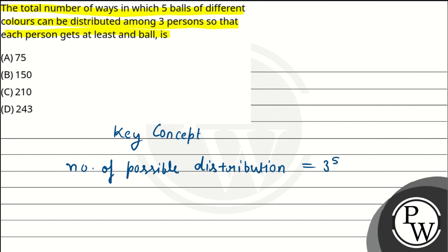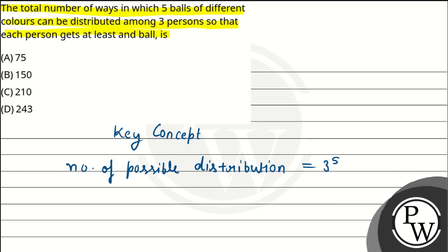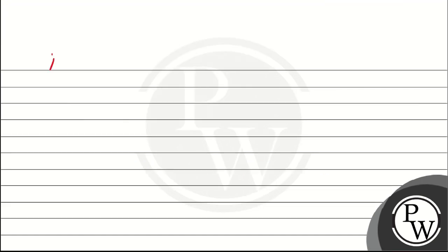Let's move to the question. Question says that we have to take number of ways, which we have to take at least one ball. First case, if one person does not get any ball.